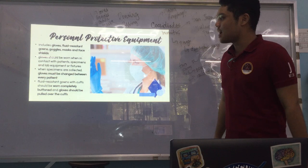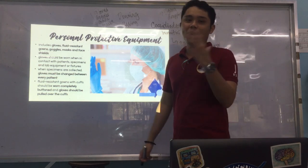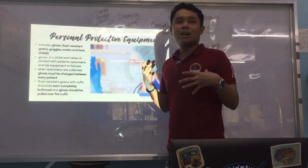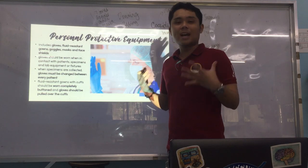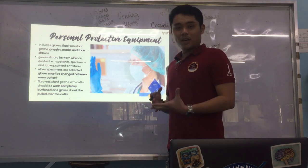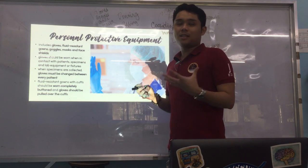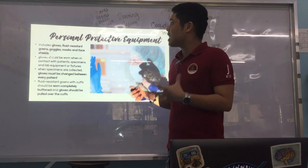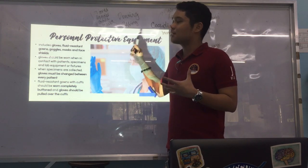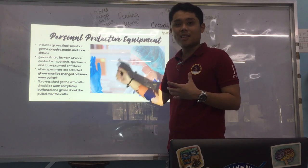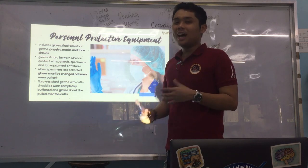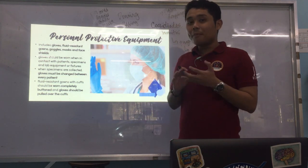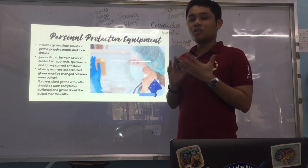Next is your PPE — personal protective equipment. This is one of your best friends in the lab, and especially now during the pandemic it is given much more importance. Personal protective equipment includes your gown, mask, goggles, and gloves. For donning — meaning how to wear your PPE — you start with your gown, then your mask, then goggles, and finally your gloves.